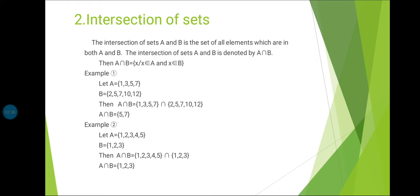Second topic: intersection of sets. The intersection of sets A and B is the set of all elements which are in both A and B. The intersection of sets A and B is denoted by A intersection B. The condition is: A intersection B = {X such that X belongs to A and X belongs to B}.